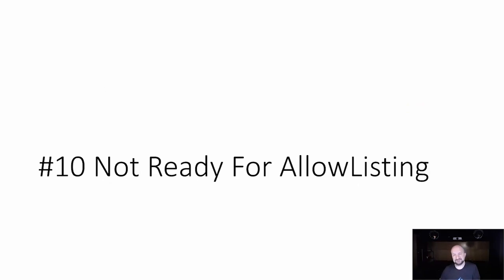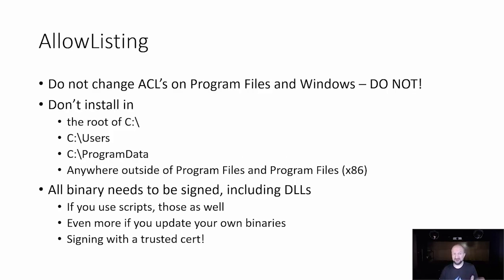Number ten: not ready for allow listing. Allow listing means we are now controlling all the binary that runs. We used to do antivirus reactively; now with tools like AppLocker we want to list the good things. The rules: first, do not touch the access control lists on Program Files and Windows — that is the biggest thing that makes me hate you, because it breaks the whole AppLocker concept and makes it insecure. Don't install in the root of C:\, don't install in C:\Users, C:\ProgramData, or a custom folder you created. That binary needs to go to Program Files or Program Files (x86). Yes, that means it requires admin rights to install — that's how we do it in enterprise.